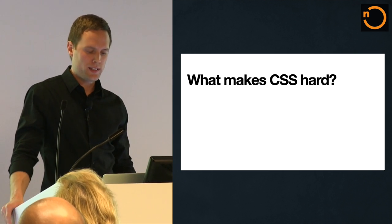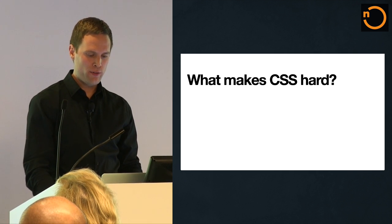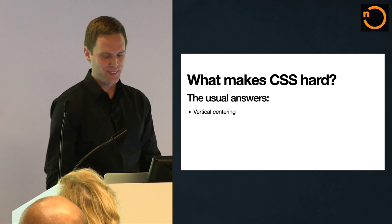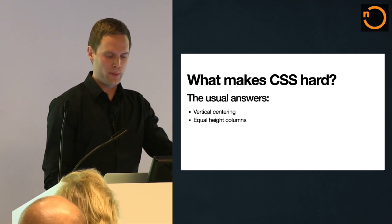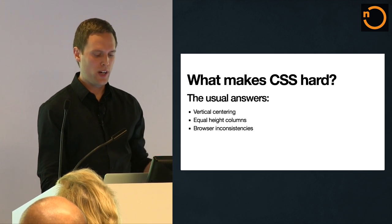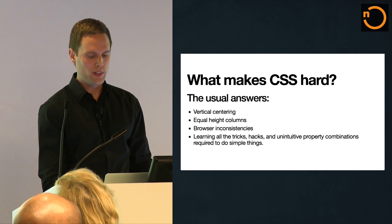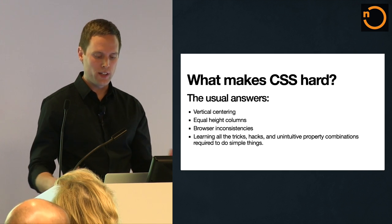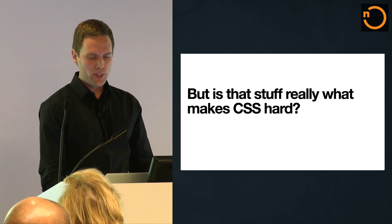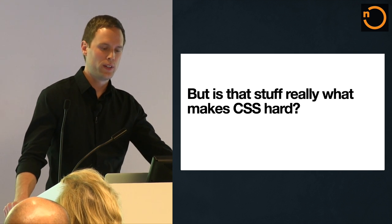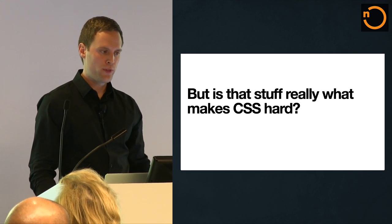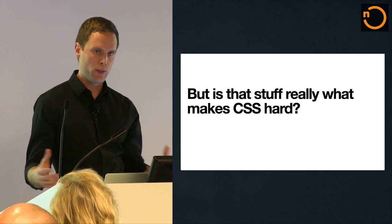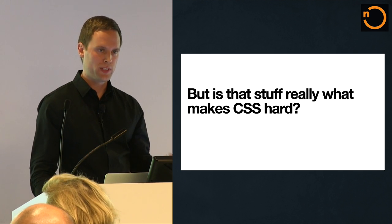I wanted to start off by talking about what makes CSS hard today. If you read things like Hacker News comments — which, by the way, you should never do — you see the same stuff over and over: vertical centering, equal height columns, cross-browser inconsistencies. You have to have this encyclopedic knowledge of tricks and hacks to get anything done. But in reality, if you work at a company with a large engineering team working on the same codebase building web applications, you know there are bigger problems with CSS than that.